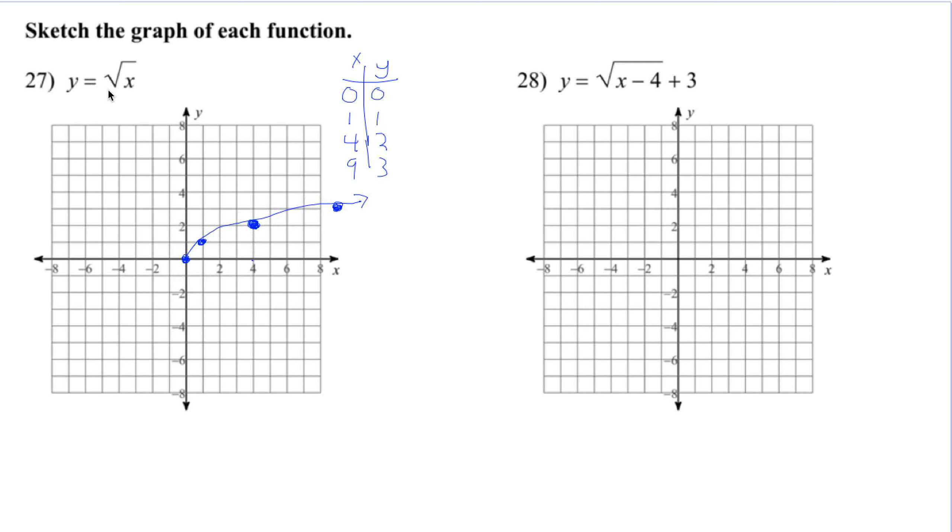That is the parent function. And so for 28, it's really our parent function, but it's shifted a little bit. And we know that when we subtract something in here, this is going to be right 4. So this concept of adding or subtracting within the function and outside the function holds true for all of our different functions. We did this once already with our parabolas. And this one's going to be up 3.